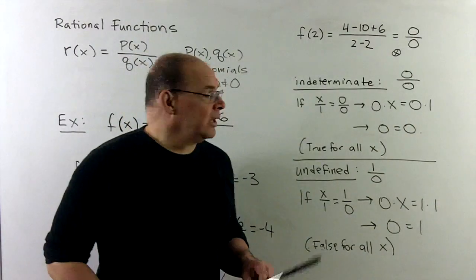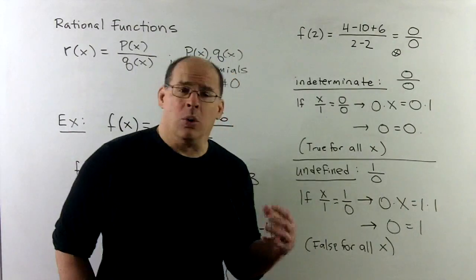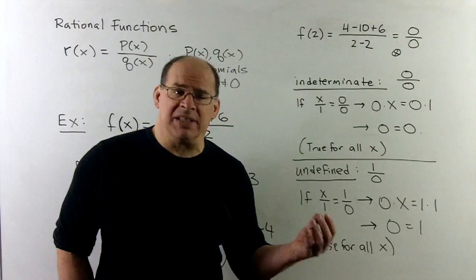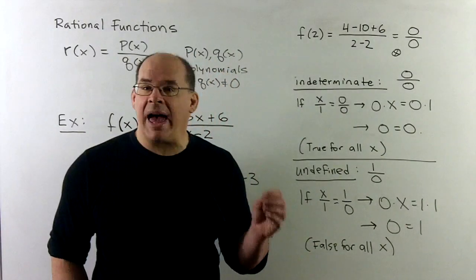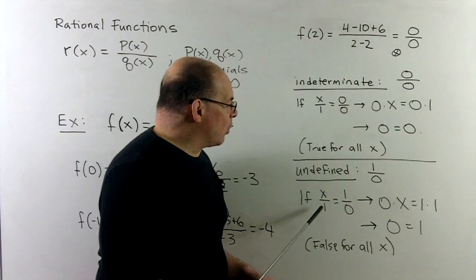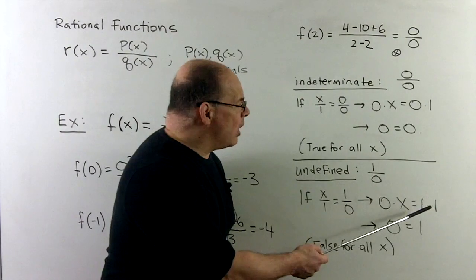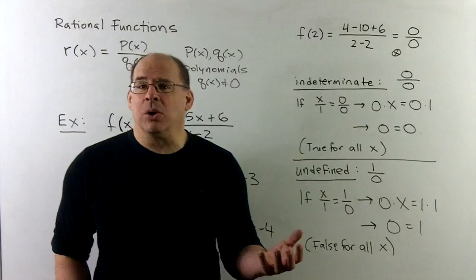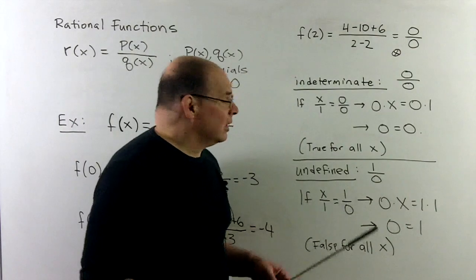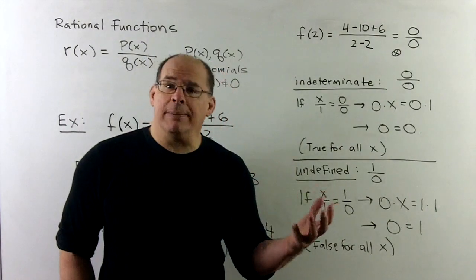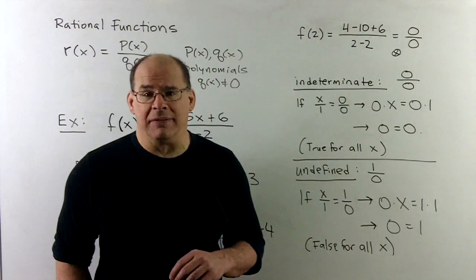On the other hand, if I take any non-zero number over 0, say 1 over 0, we'll call this undefined. And again, I can proceed the same way. If I say that 1 over 0 is equal to a fixed real number x, then I'll take x over 1 equal to 1 over 0, cross multiply, I have 0 times x equal to 1 times 1. That gives me 0 equal to 1, which is false. And you'll note it will be false no matter what we choose for the x. So if I try to write 1 over 0 as a real number, there's no candidates that are going to work. So I would have to call that undefined.